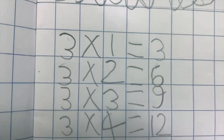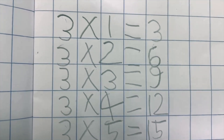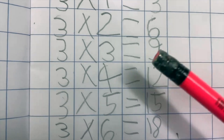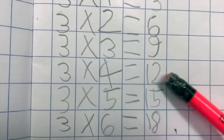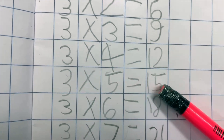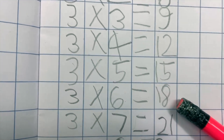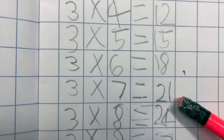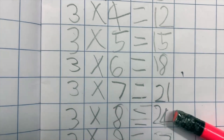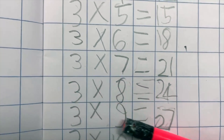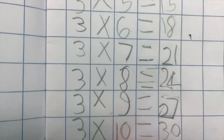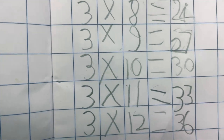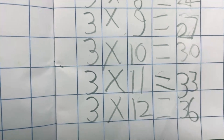3 tables: 3 ones are 3, 3 twos are 6, 3 threes are 9, 3 fours are 12, 3 fives are 15, 3 sixes are 18, 3 sevens are 21, 3 eights are 24, 3 nines are 27, 3 tens are 30, 3 elevens are 33, 3 twelves are 36.